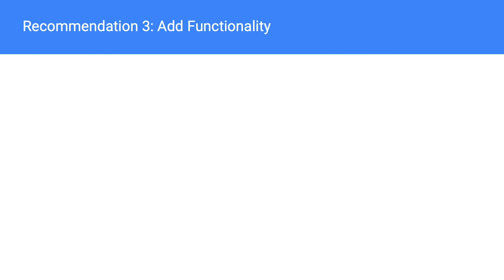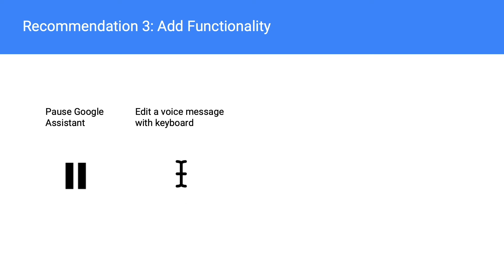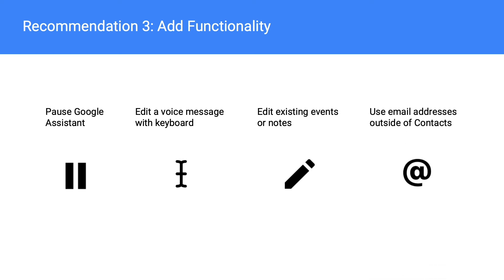Our recommendations for added functionality include: 1. Adding a pause button and the ability to save a pause, especially useful for tasks with long voice transcriptions. 2. Users would like to edit a text or email with the keyboard; for email, saving it as a draft to be formatted later within Gmail could help. 3. Since users were confused about how to create a note or calendar event, 4. they need to be able to edit existing events and notes. 5. Most users didn't store email addresses in their contacts, making them likely to give up on voice email; they'd like to be able to type out or say a new email address.